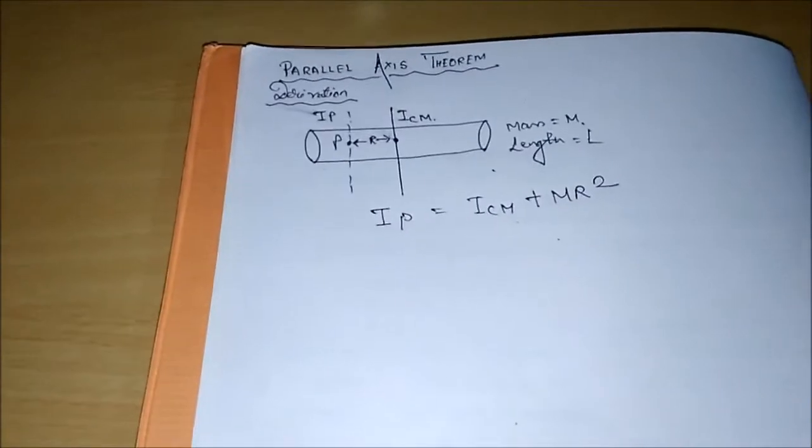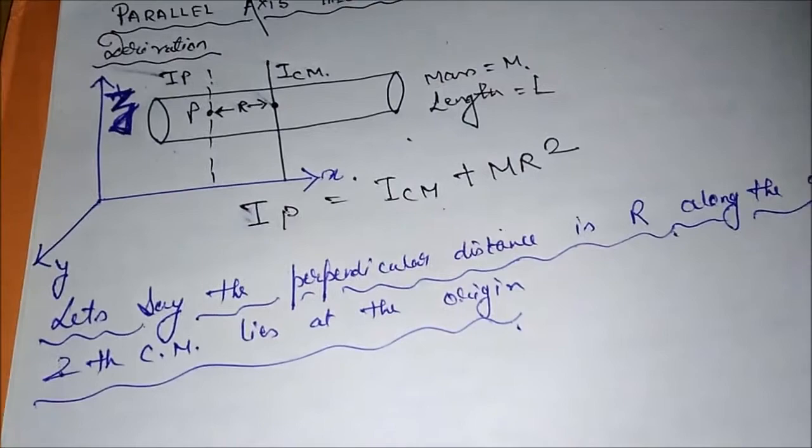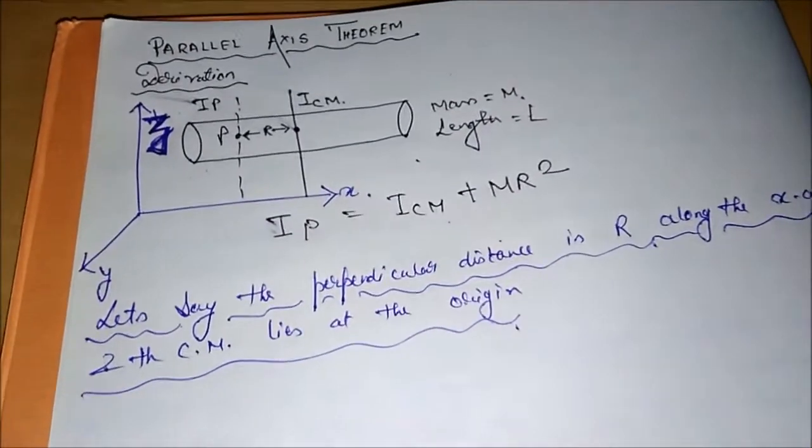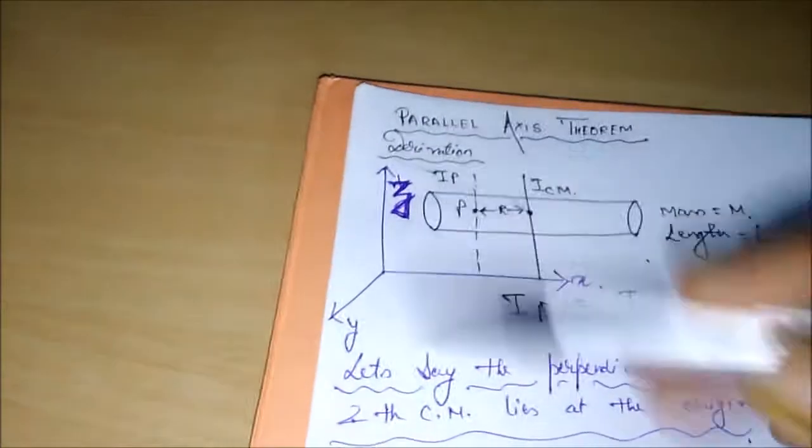Let's move on and have a look at the derivation part. Now let's say that the perpendicular distance, that is this R that we have considered, is along the x-axis. Just imagine the entire scenario in a Cartesian coordinate system according to this diagram.